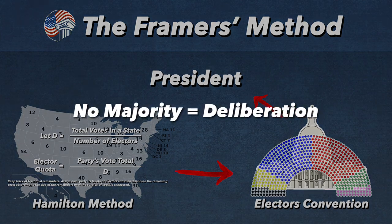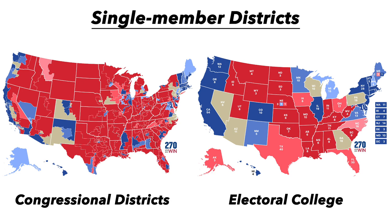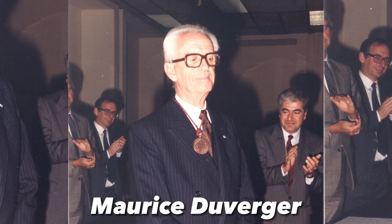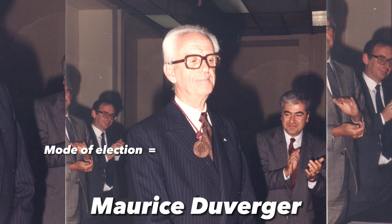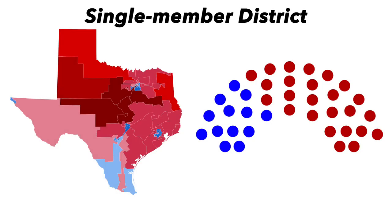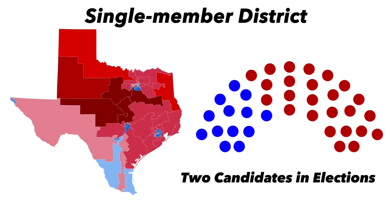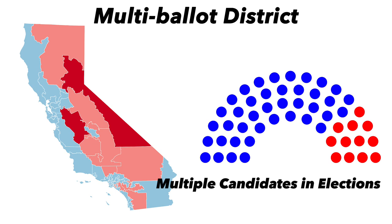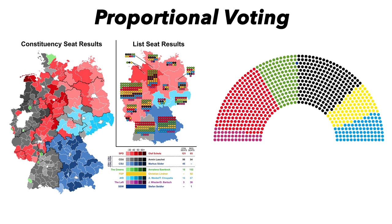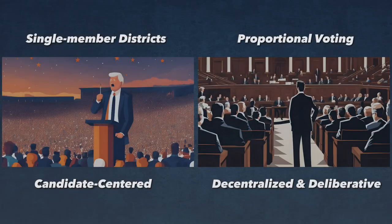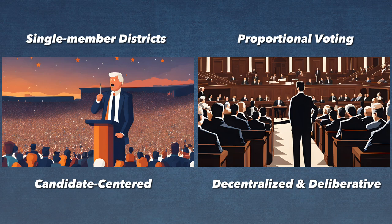The reason the United States only has two viable political parties is because it uses single-member districts. According to the French political scientist Maurice Duverger, there are three different modes of elections that determine the number of candidates in an election and the number of politicians that end up in government. In a single-member district with plurality voting, the result will be two candidates in elections and two parties in government. In a single-member district with multiple ballots, the result will be multiple candidates in elections with the potential for multiple parties in government. In a proportional voting system based on percentage, the result will be multiple candidates and multiple parties in government.